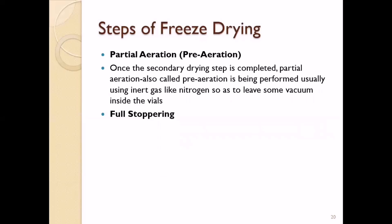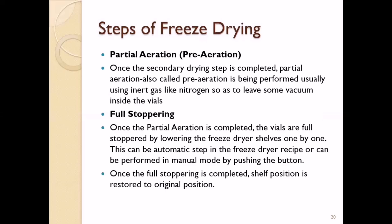After partial aeration, full stoppering is performed to fully stopper the vials so there is no contact with the external atmosphere, and the freeze-dried product inside the vial maintains its moisture content and required physical and chemical characteristics during shelf life. Full stoppering is achieved by lowering the freeze-dryer shelves one by one — this can be an automatic step in the freeze-dryer recipe or performed in manual mode. Once full stoppering is completed, the shelf position is restored to its original position.